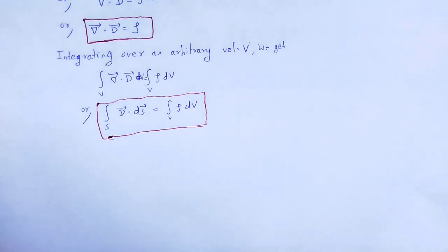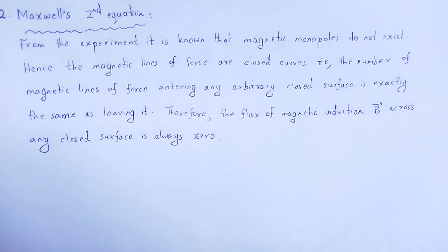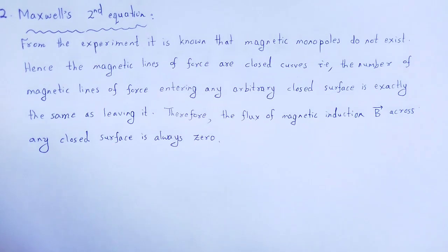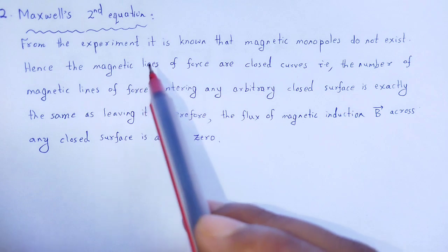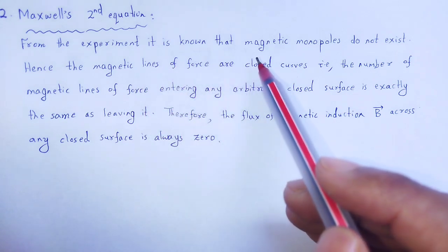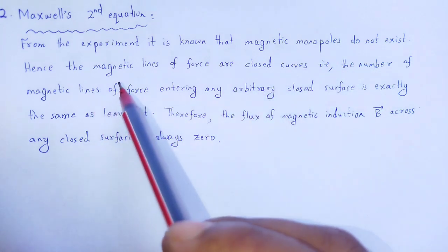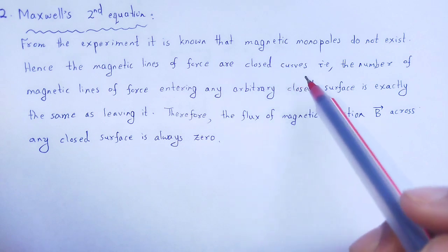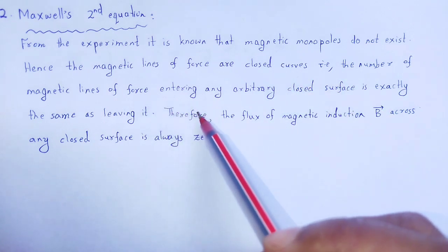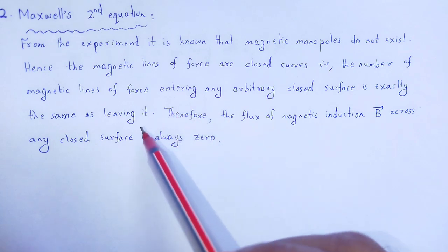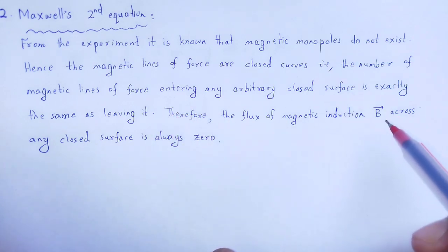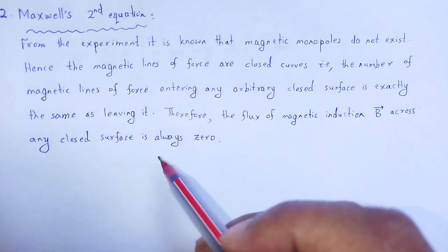Next is the derivation of Maxwell's second equation from Gauss's law in magnetostatics. From experiment, it is known that magnetic monopoles do not exist. Hence, the magnetic lines of force are closed curves — the number of magnetic lines of force entering any arbitrary closed surface is exactly the same as leaving it. Therefore, the flux of magnetic induction B across any closed surface is always zero.